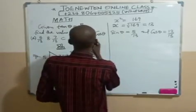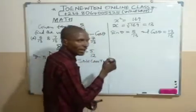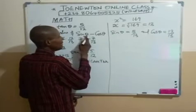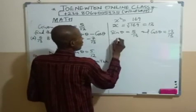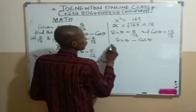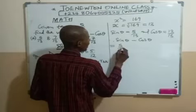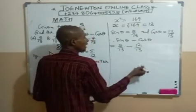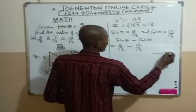Now, let's solve the question. We are asked to find sine theta minus cosine theta. Therefore, sine theta minus cosine theta will now be equal to 5 over 13 minus 12 over 13.